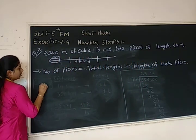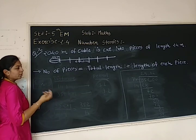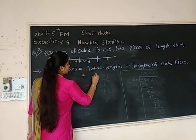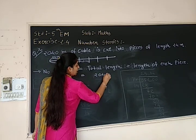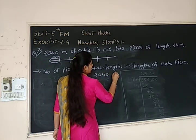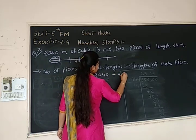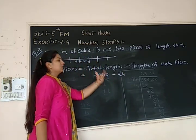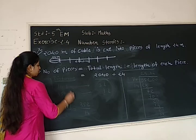So that will be number of pieces we don't know. Total length is 2040 and the length of each piece is 24. So this division we have performed.